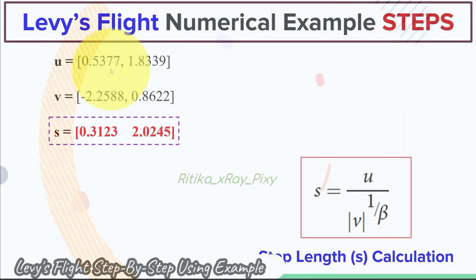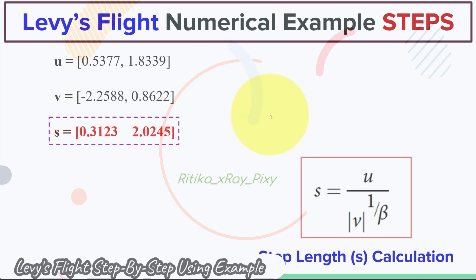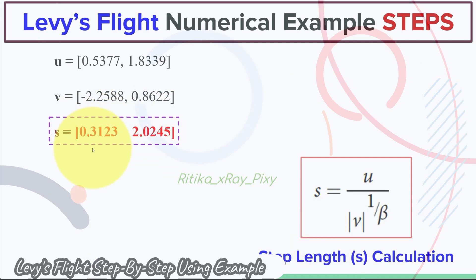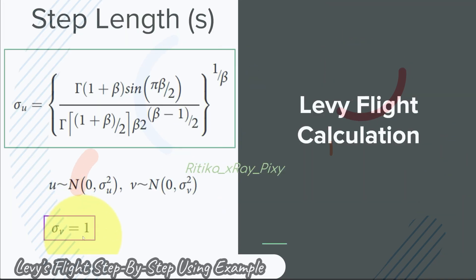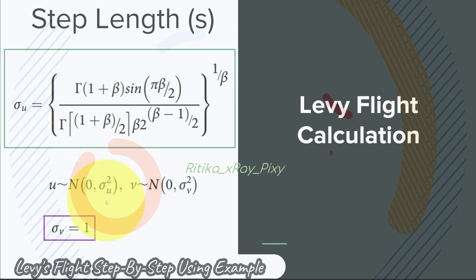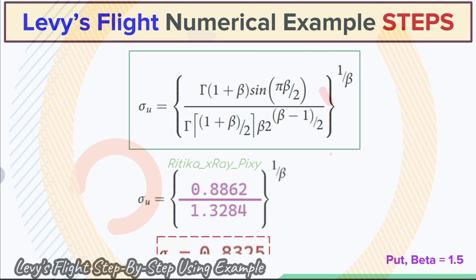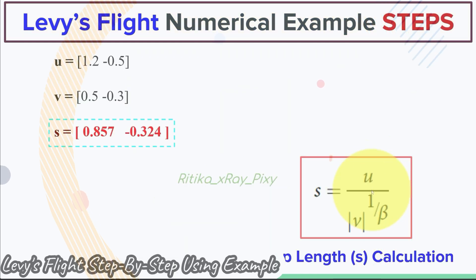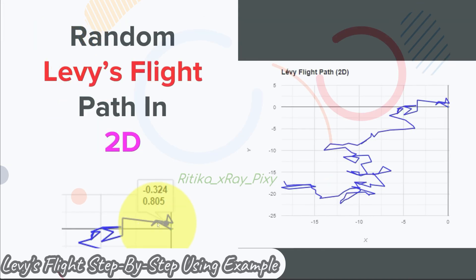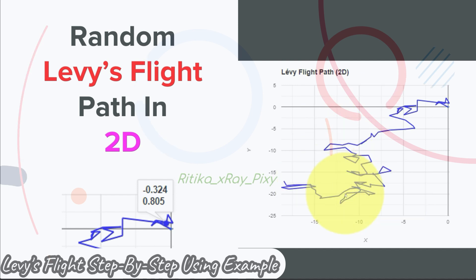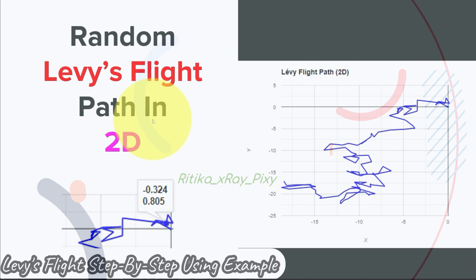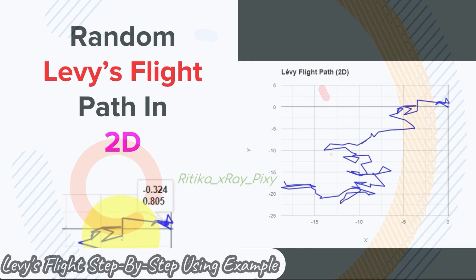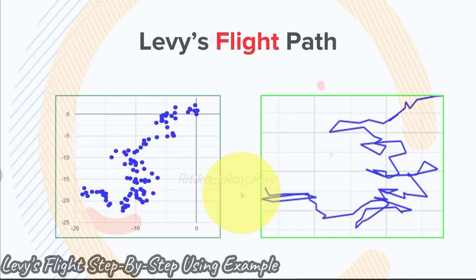The u and v values are randomly distributed. Putting these values into the step length calculation gives us the first step length. Note that sigma_v is already 1 so we only need to calculate sigma_u. For the second step, suppose we obtain sigma_u equal to 0.8325, and substituting those values gives us the second calculated step. You can see the Lévy flight path visualized in two-dimensional space, with each step calculated in this manner.